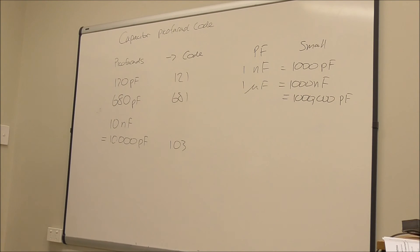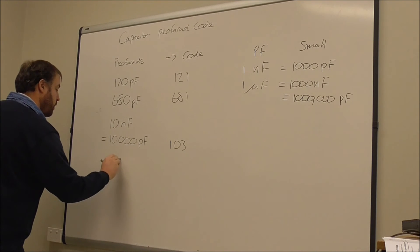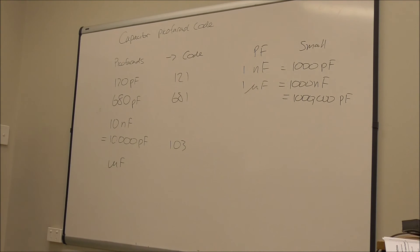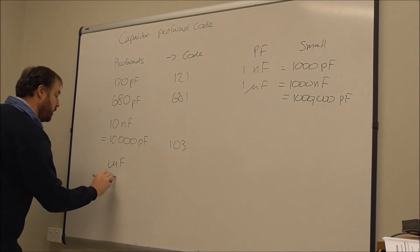So if I had a capacitor that was 1 microfarad and I needed a picofarad code for it, what I need to do is write that in terms of picofarads, so it's 1,000,000.